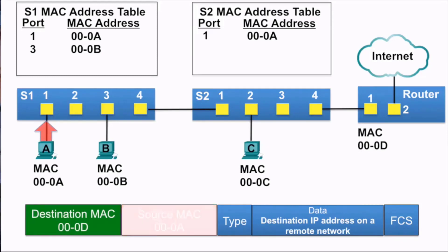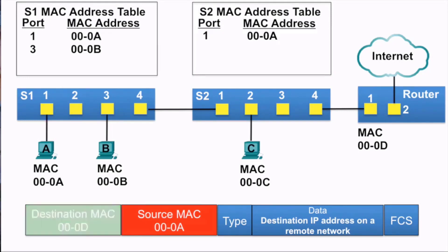Switch S1 receives the frame and examines the source MAC address, which is in its MAC address table, so it simply refreshes the 5-minute timer. It then examines the destination MAC address, and because that destination MAC address is not in S1's MAC address table, it floods the frame out all ports.